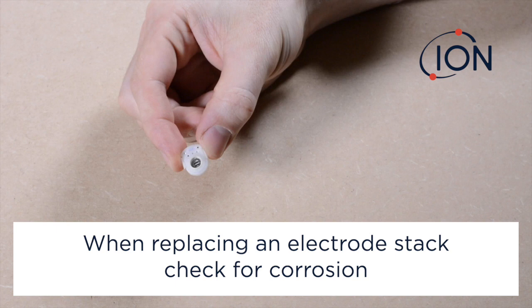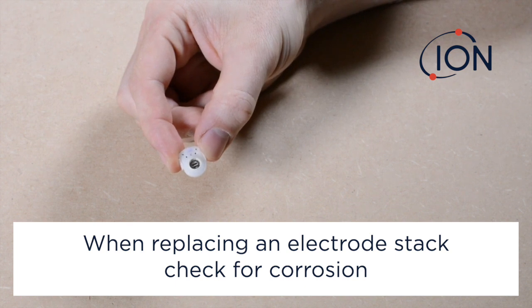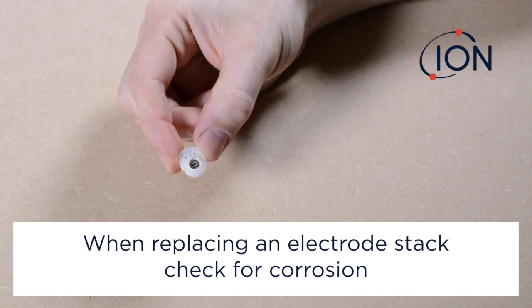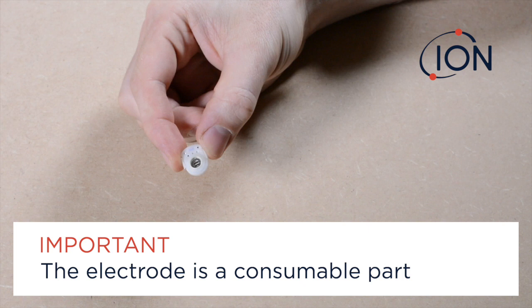When replacing the electrode stack, it is useful to inspect the metallic stacks for sign of corrosion or damage. This will help to determine the frequency of maintenance required in each particular application. Remember, the electrode stack is a consumable part.